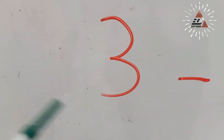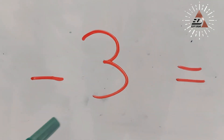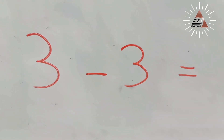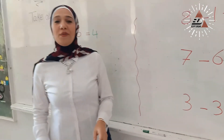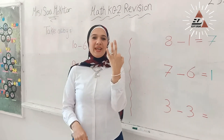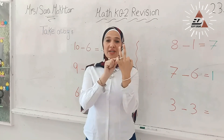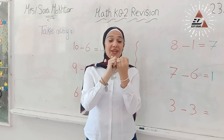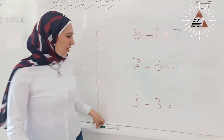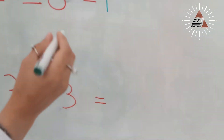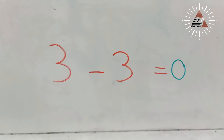What is this number? 3 minus. What is this number? 3. They are the same. Now, put one of them on your hand and take away another 3: 1, 2, 3. I have nothing, just zero. We are going to write zero after the equal sign. Super KG2.